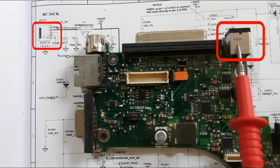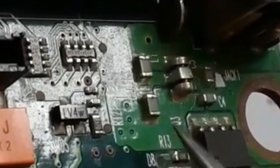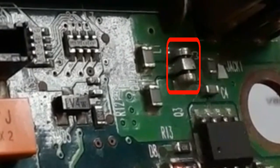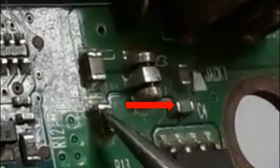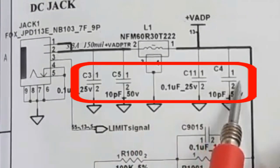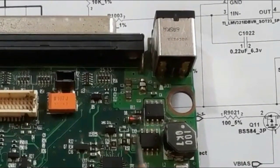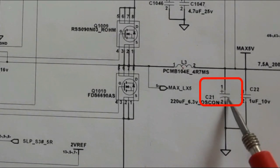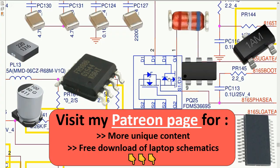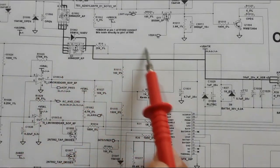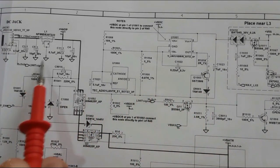We're going to see the charge IC circuit in the laptop motherboard components. We'll look at the DC jack (power jack), the inductor near the power jack, four ceramic capacitors, MOSFETs or switches near the power jack, and the C21 polarized capacitor. We'll examine all these components in the circuit diagram and in the motherboard.